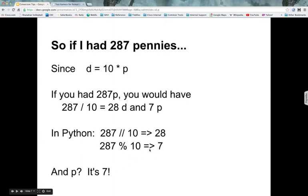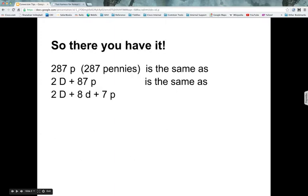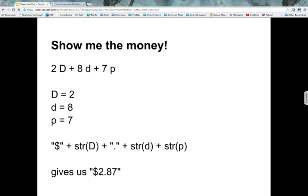So there you have it. You have 287 pennies is the same as $2.87, which is the same as $2, 8 dimes and 7 pennies. Pretty simple, right? So show me the money. How do we format this? You have $2, 8 dimes and 7 pennies.